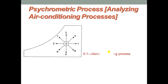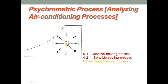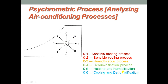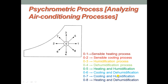The process 0 to 1, moving towards the right side on the chart, is named as sensible heating process. The process moving from 0 to 2 on the left side is called sensible cooling. The process moving vertically upward from 0 to 3 is humidification, and 0 to 4 moving downward is dehumidification. Process 0 to 5 is heating and humidification, 0 to 6 is cooling and dehumidification, 0 to 7 is cooling and humidification, and 0 to 8 is heating and dehumidification.